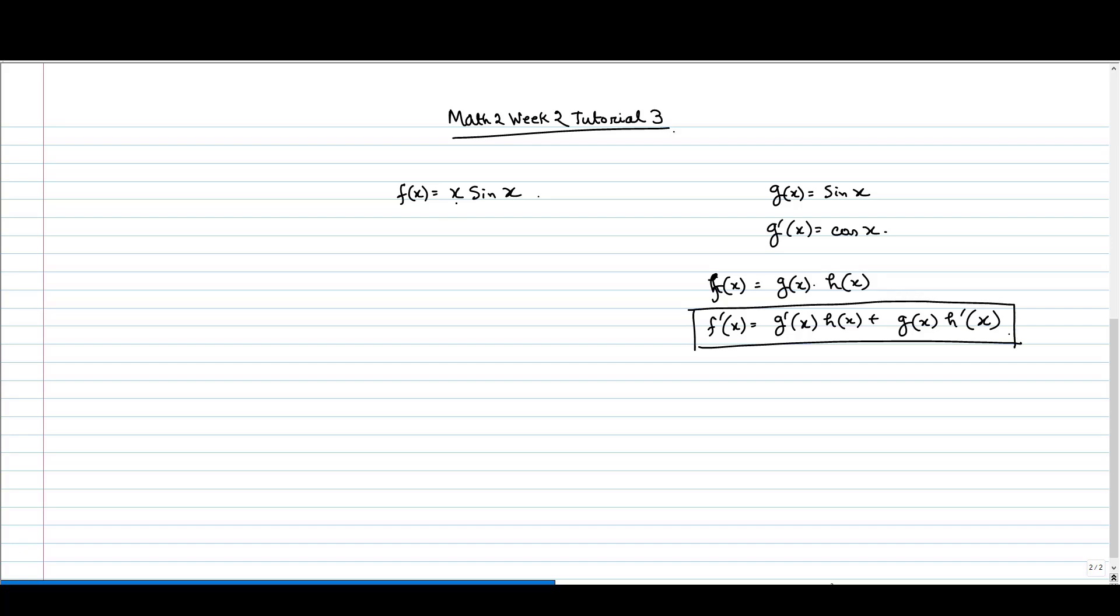Here we can see that it is product of two functions x and sin x and we know the derivative of x, we know the derivative of sin x. So it is quite easy to calculate f dash x that will be first derivative of x will be 1 into sin x plus x into derivative of sin x that is cos x. So it will give us sin x plus x cos x.